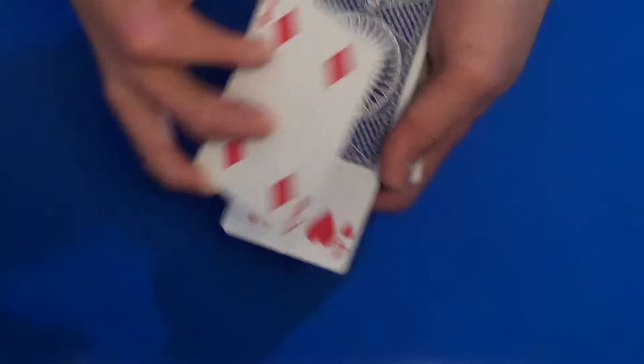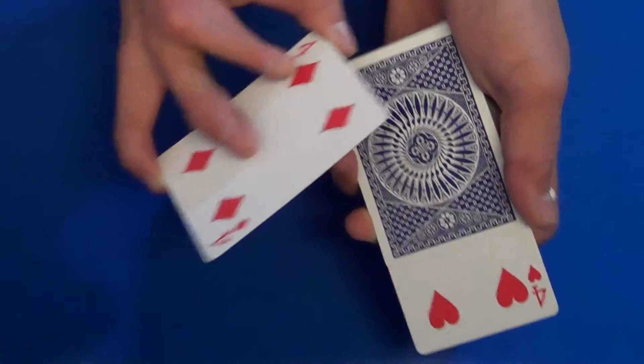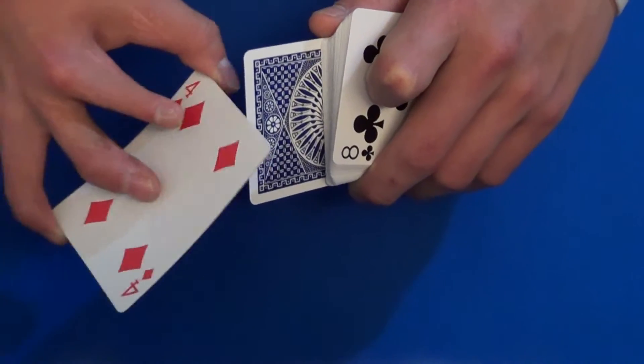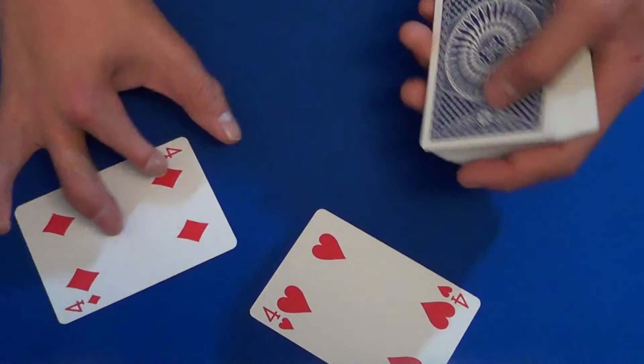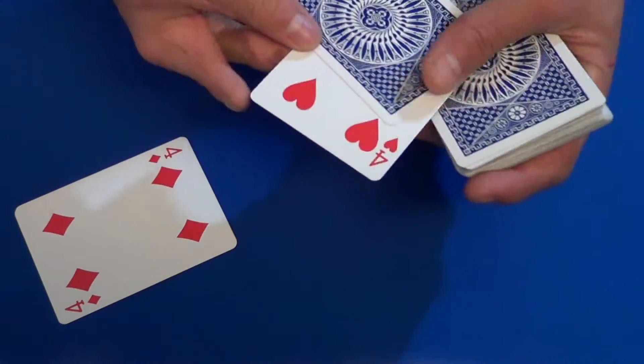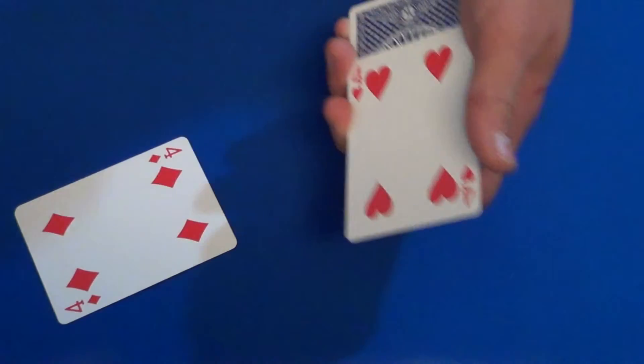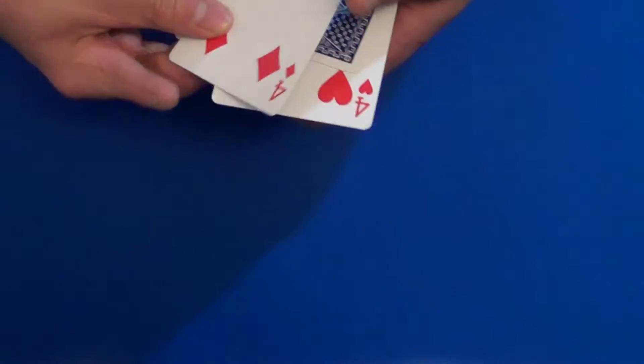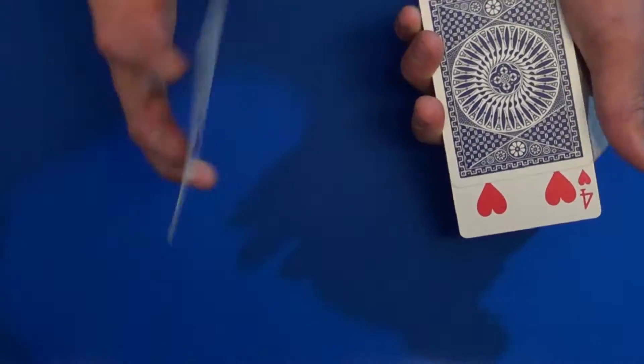Then you leave it flush on the deck with all the other cards. So right now, the only card that's out-jogged is the four. Now you've actually got two cards on the other four - this is actually the joker and the four back to back.